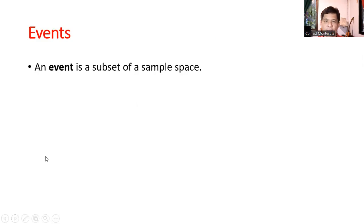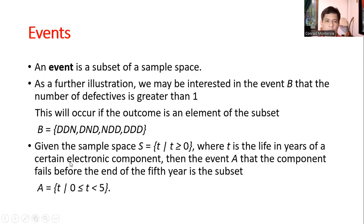Events. An event is a subset of a sample space. So for example, as part of illustration, we may be interested in the event B that the number of defectives is greater than one. This will occur if the outcome is an element of the subset B, DDN, DND, NDD, or DDD. So this is a subset of the three item defective, not defective experiment. It's an illustration.